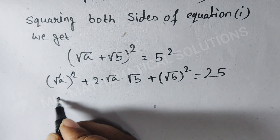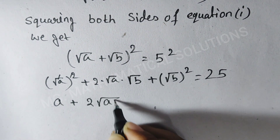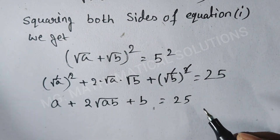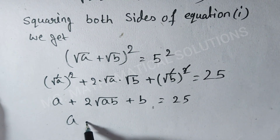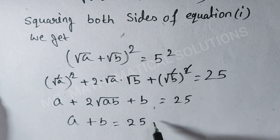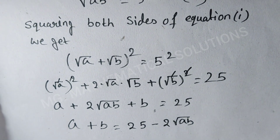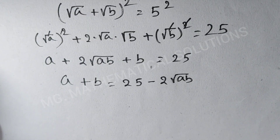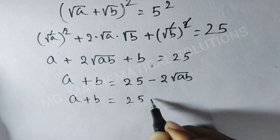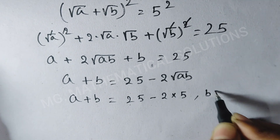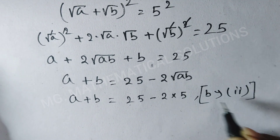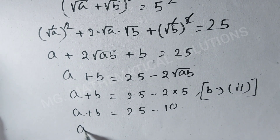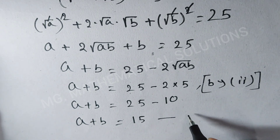Square and root cancel, so a plus 2 root ab plus b equal to 25. Therefore a plus b equal to 25 minus 2 root ab. We know root ab equal to 5 from equation 2, so a plus b equal to 25 minus 2 times 5, which is 25 minus 10, giving a plus b equal to 15. This is equation 3.